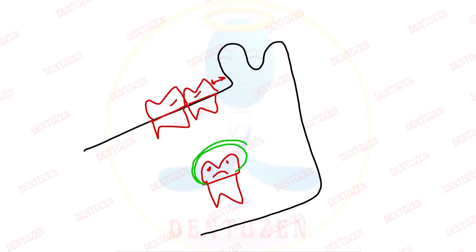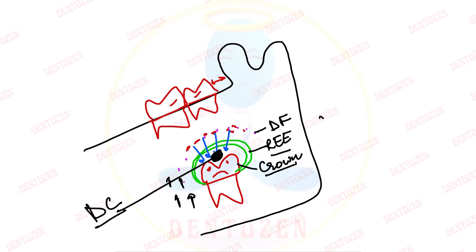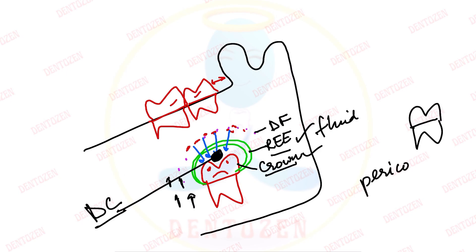Each impacted tooth has a friend — the reduced enamel epithelium — that always covers the crown. Outside that is the dental follicle, which is mesodermal tissue containing capillaries. When the tooth applies pressure over the dental follicle, venous outflow is obstructed, and fluid leaks out — coming between the reduced enamel epithelium and the crown of the unerupted or impacted tooth, forming a fluid-filled cavity. This is called a dentigerous cyst.